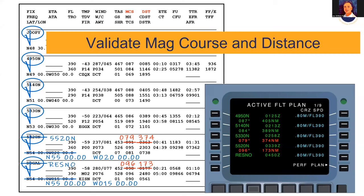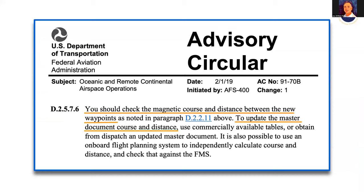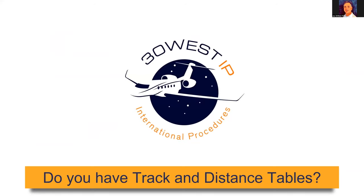The third method — mentioned by the subject matter expert in our previous webcast — uses commercially available tables to derive the new mag course and distance, which you then check against the FMS. These are often referred to as track and distance tables. This leads us to another question: do you have track and distance tables available to you in your aircraft?